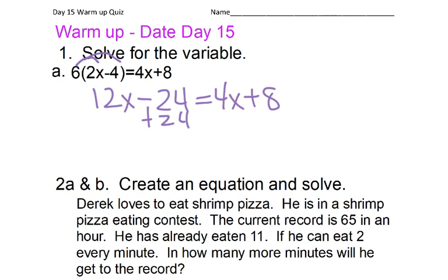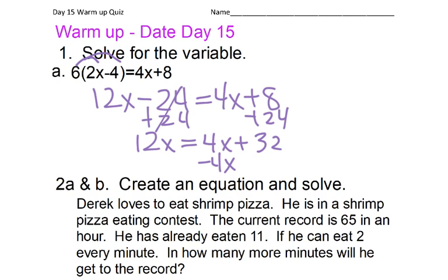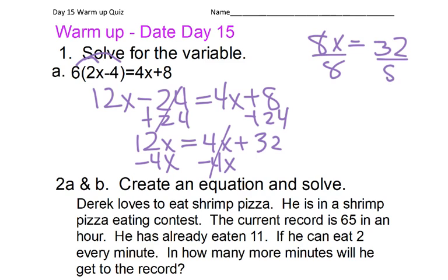We could add 24 to both sides, giving us 12x equals — because that would be 0 — 4x plus 32. Subtract 4x from both sides, we'd end up with 12 minus 4 is 8x, equals 32. Divide by 8, and we should have got x equals 4.